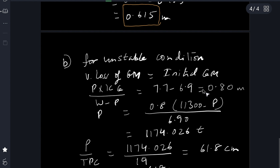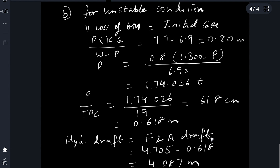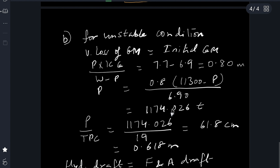From the time the ship entered dry dock and just took the blocks aft, the water level is falling and P force is increasing, until it has increased so much that the virtual loss becomes equal to the initial arrival GM of 0.8 meters. Solving for P: this P force comes out to be 1174.026 tons.